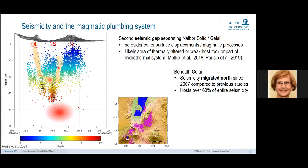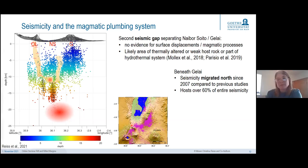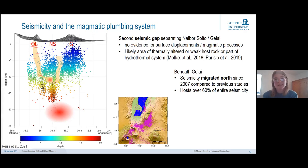Cynthia Ebinger asks about the juxtaposition of high magmatic CO2 degassing along the western Natron border fault, which is relatively weakly seismically active, and what might be happening with that fault system as strain migrates to the central basin. The speaker finds this completely puzzling, speculating that perhaps the fluid pathways already exist so no new earthquakes are needed while degassing is occurring, but acknowledges they can only speculate.